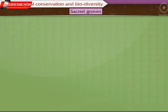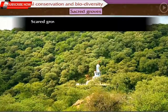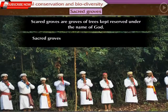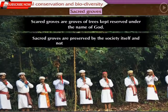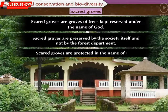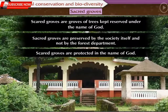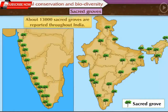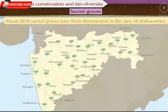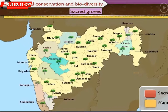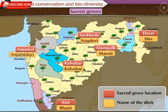Sacred groves are groups of trees kept reserved under the name of god. These groups are preserved by the society itself, not by the forest department. This type of forest is not only confined to the Western Ghats but spread throughout India. About 13,000 sacred groves are reported throughout India, and about 2,820 have been documented in the state of Maharashtra. Each sacred grove is dedicated to one of the deities.